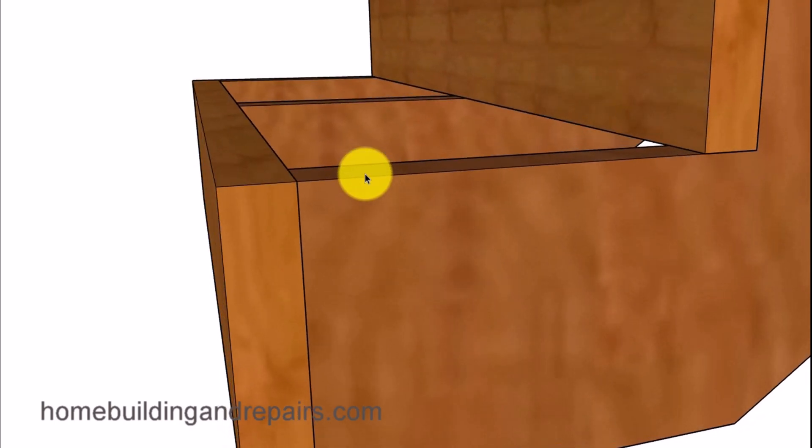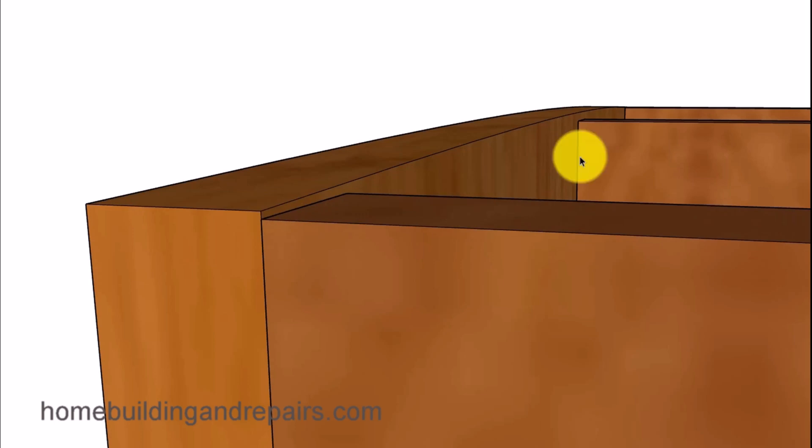However, conventional lumber like Douglas fir can shrink, and I've seen it happen often. When it does, even with all the adhesive and glue, it can still separate and create that awful squeaking sound that you are trying to avoid by watching this video.